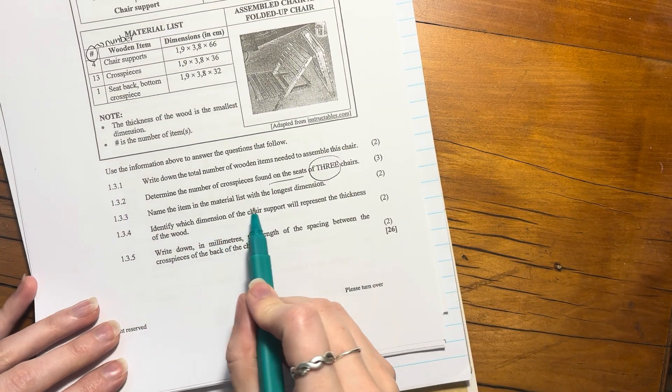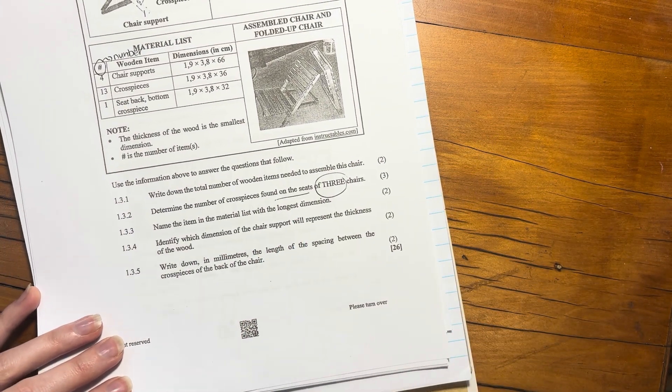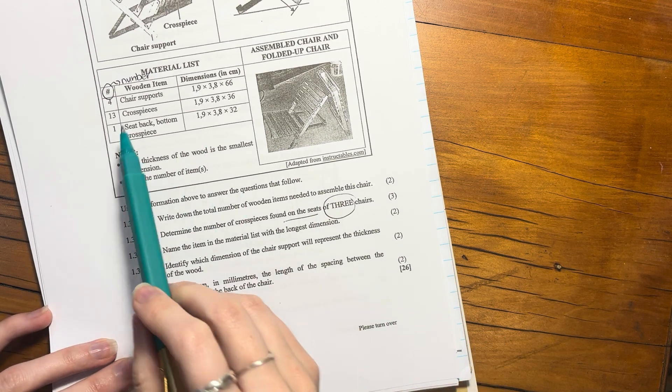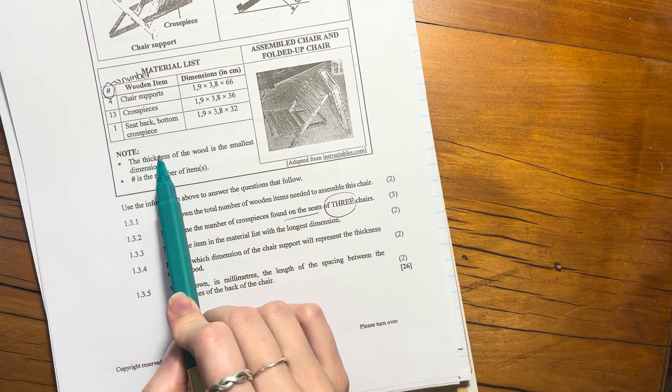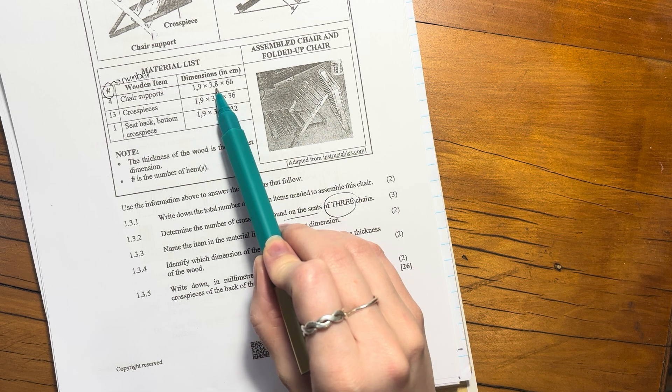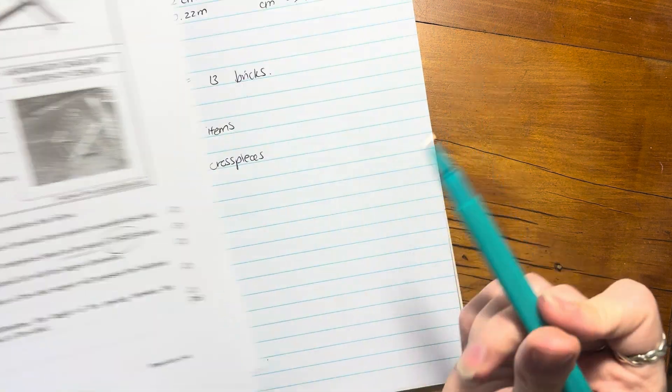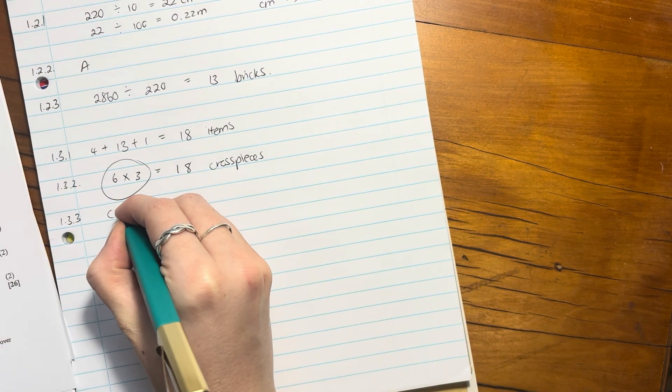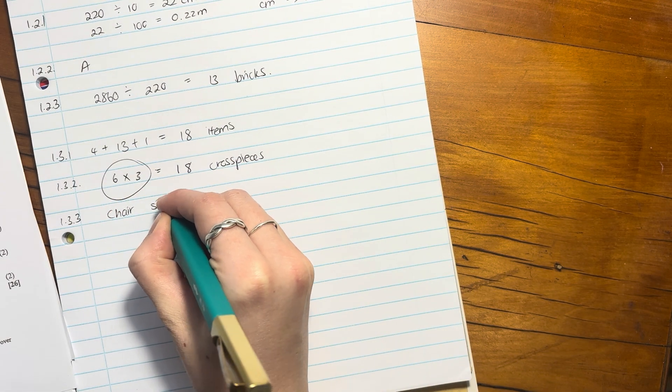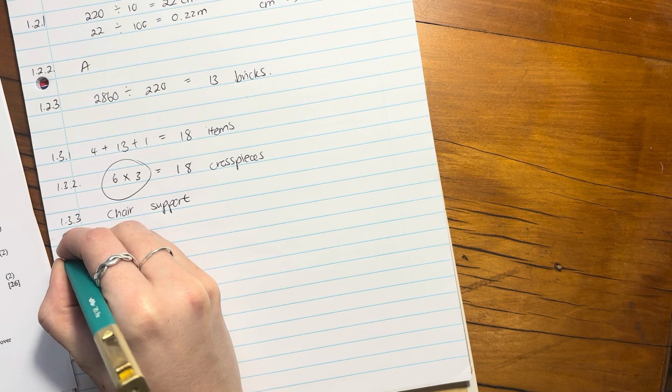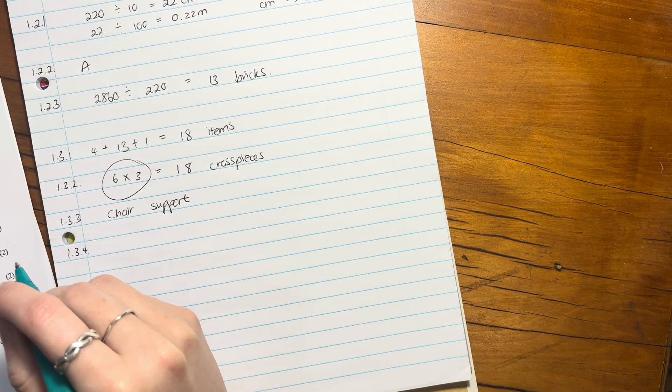Name the item in the material list with the longest dimension. So here's a material list. Let's look here for the longest dimension. I think it's at 66. 66 belongs to the chair support. Easy enough. Chair support. That was easy peasy.